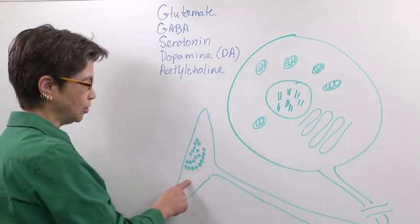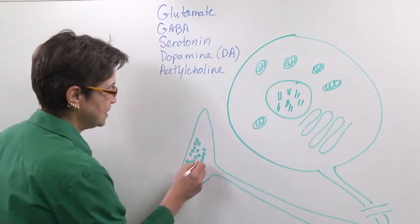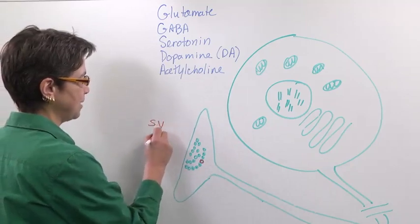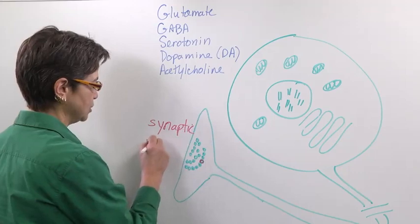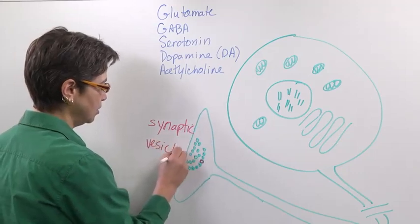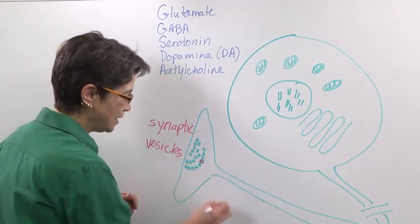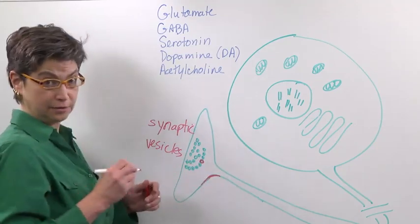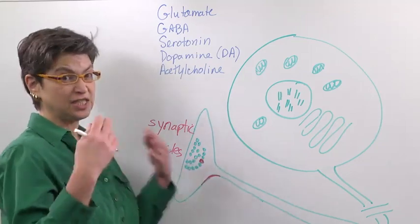This synaptic terminal has these entities here which are called synaptic vesicles. They're small little organelles—little vesicles. They are made of a membrane just like the cell has a cell membrane. These vesicles have a vesicular membrane.